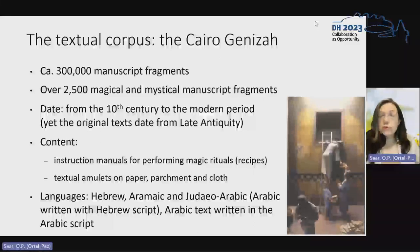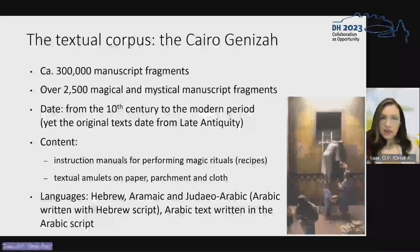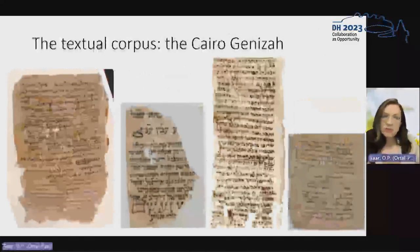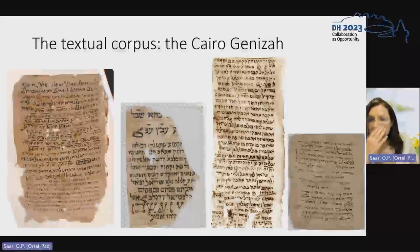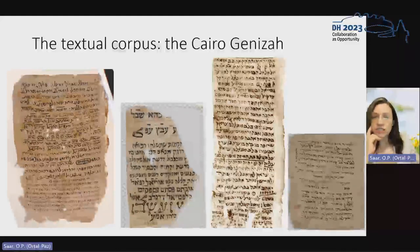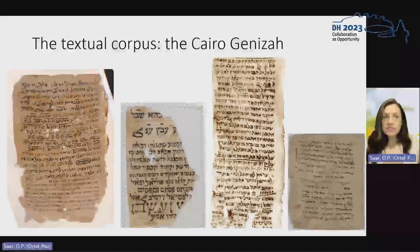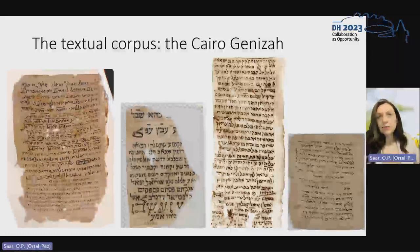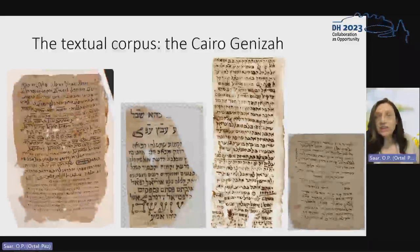Generally speaking, the Cairo Geniza corpus contains 2,500 magical and mystical manuscript fragments. Visually speaking, this is how those fragments look. In some cases they would be almost complete, such as the one you see on the right-hand side. But in other cases these are really worn-out fragments — they can miss about half a page, they can have holes that were created during the centuries. And obviously, these lacunae have implications for our digital project, as you will see in a moment.